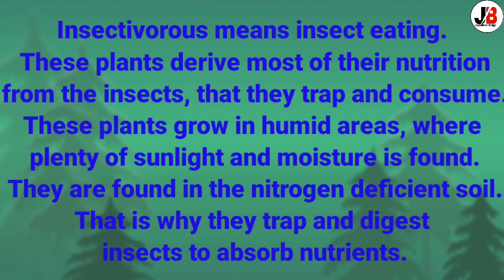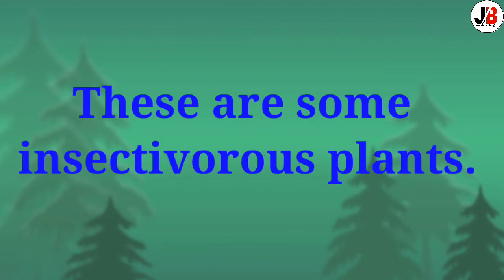These plants derive most of their nutrition from the insects they trap and consume. They grow in humid areas where plenty of sunlight and moisture is found. They are found in nitrogen-deficient soil, which is why they trap and digest insects to absorb nutrients.